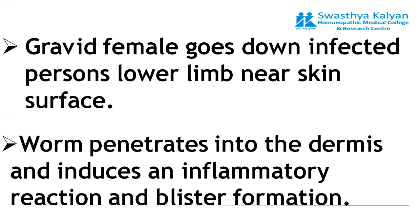The gravid female goes down the infected person's lower limb near the skin surface. The worm usually penetrates into the dermis and induces an inflammatory reaction, and a blister is formed. This blister formation is required because the worm has to release its larvae — so the blister serves as a portal for release of these larvae.